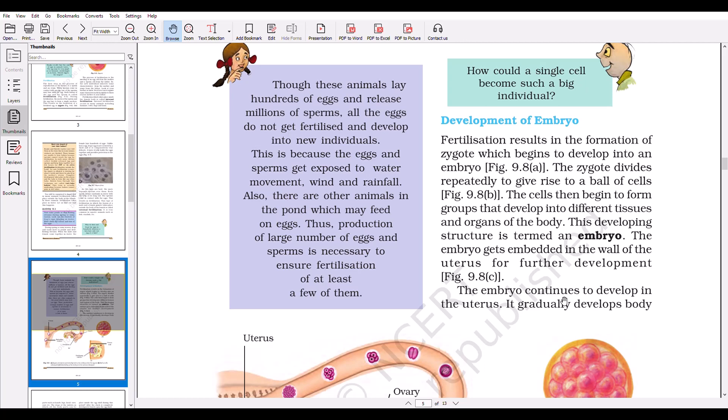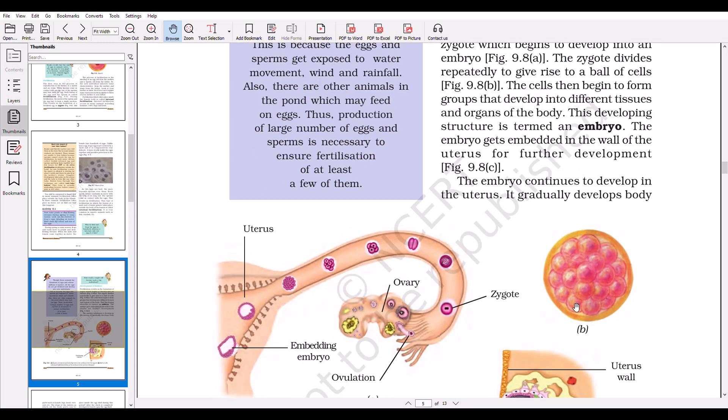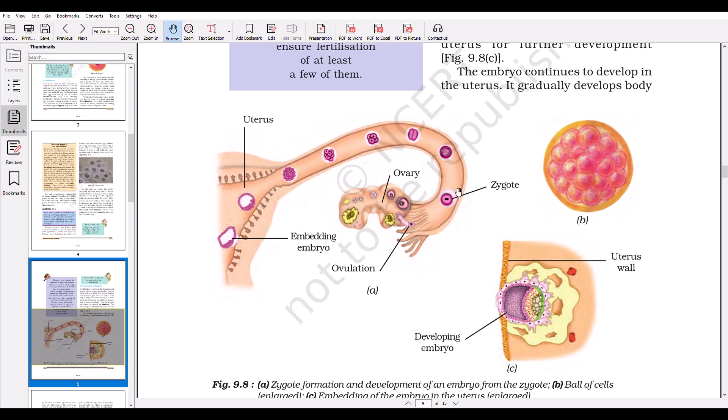So now we will proceed towards development of the embryo. Fertilization results in the formation of a zygote which begins to develop into an embryo. The zygote divides repeatedly to give rise to a ball of cells. The cells then begin to form groups and develop into different tissues and organs of the body. This developing structure is termed an embryo. The embryo gets embedded in the wall of the uterus for further development. This is the zygote, and through different processes of growth, it travels into the uterus. There it embeds itself to the wall of the uterus and grows there.